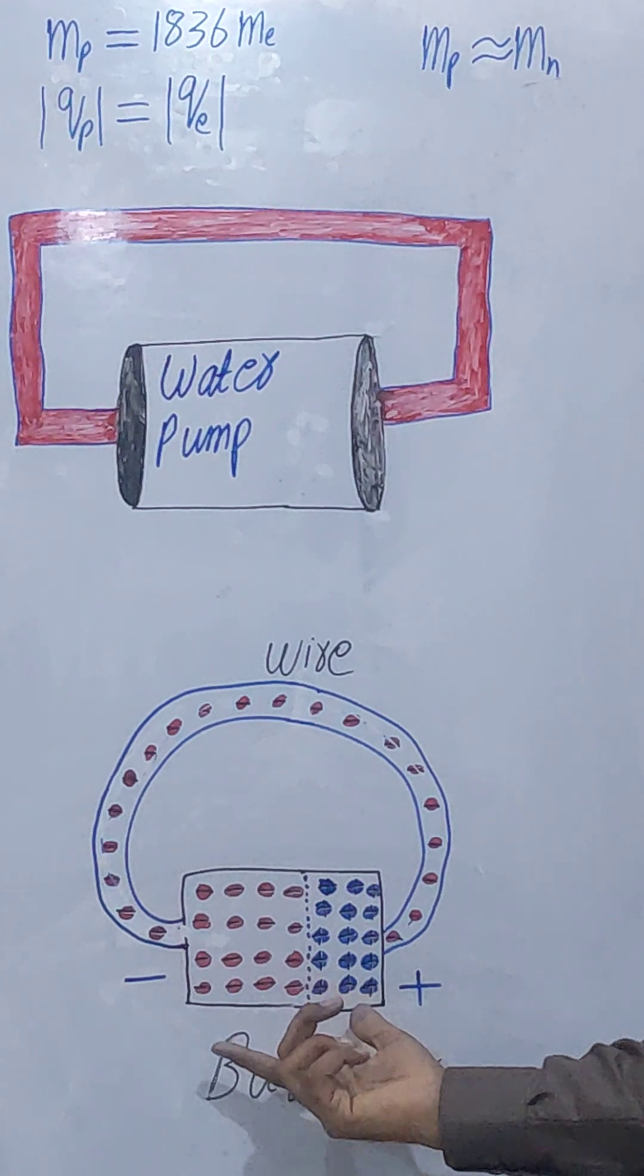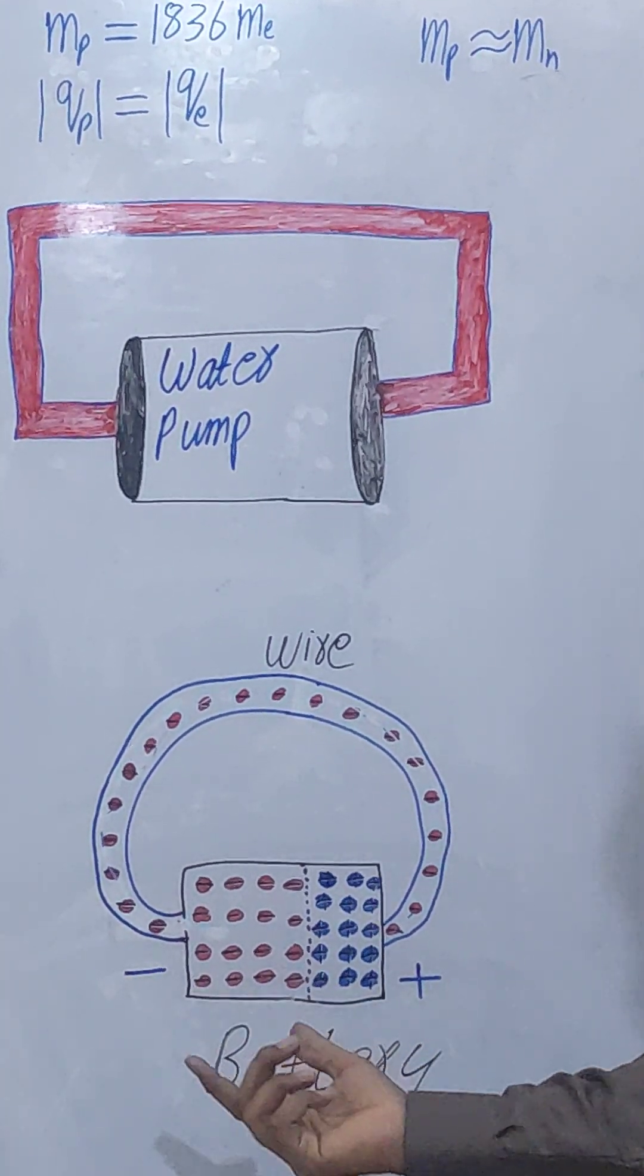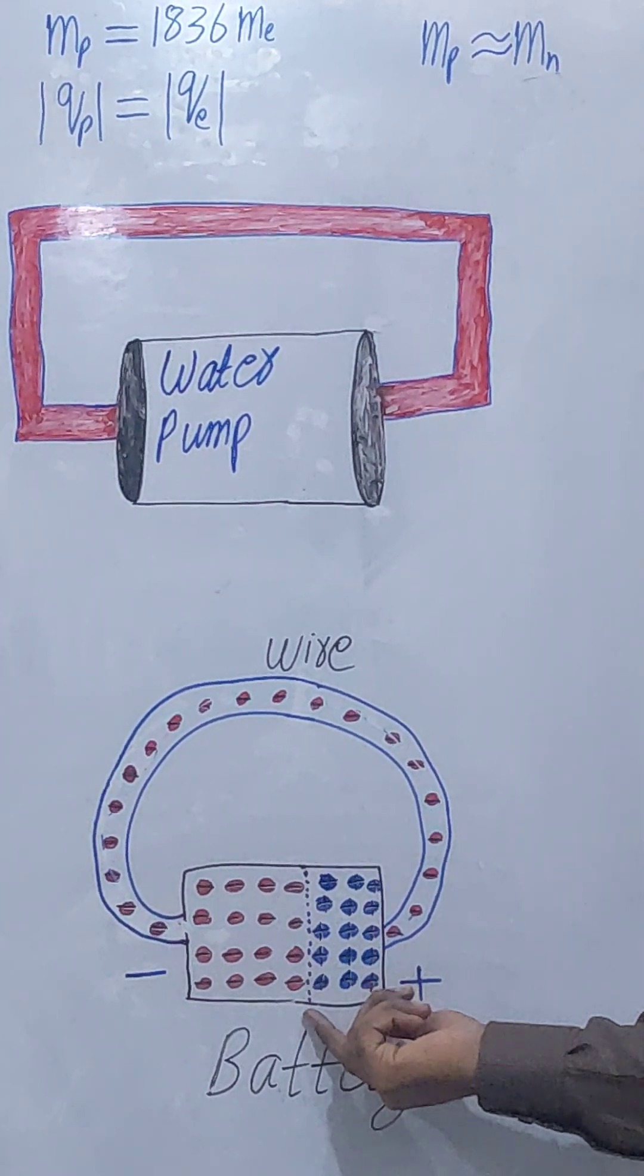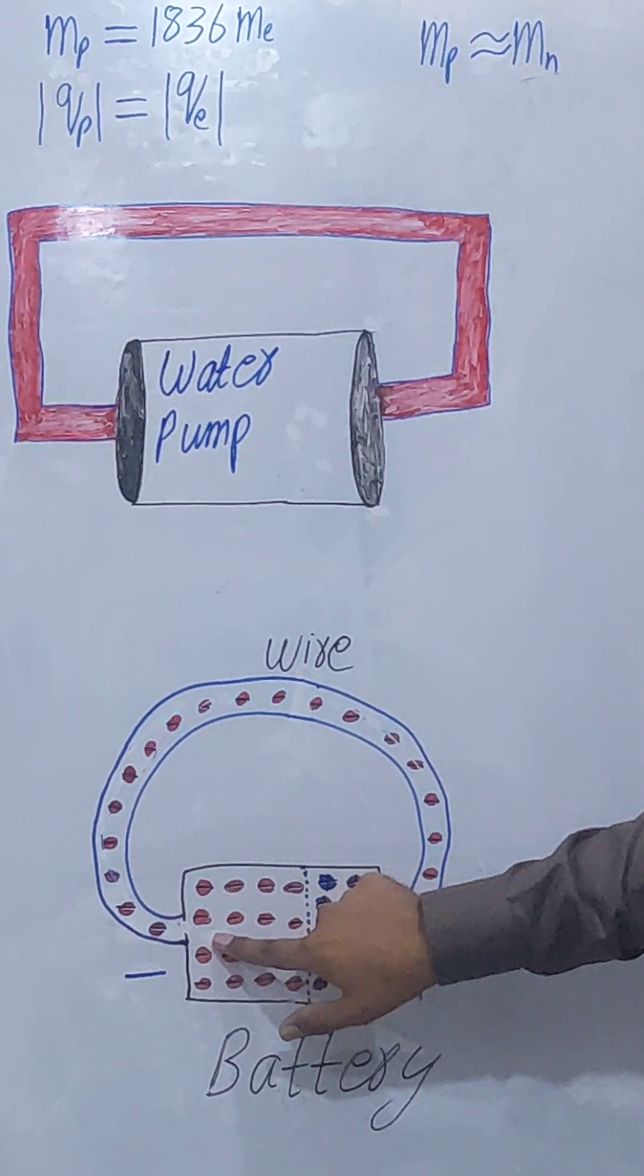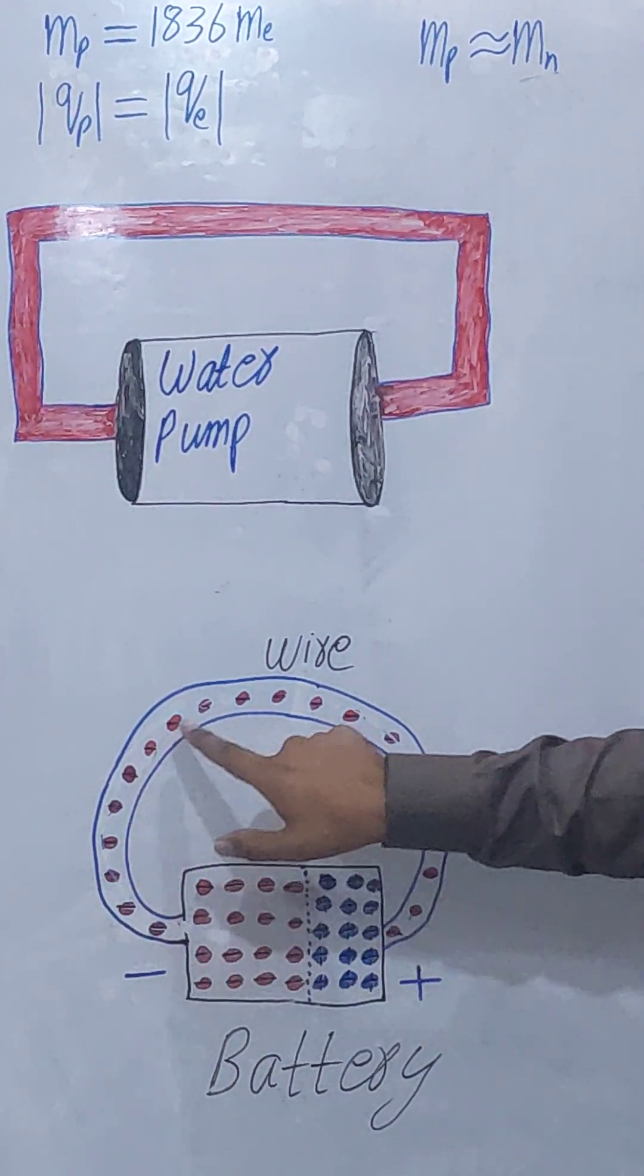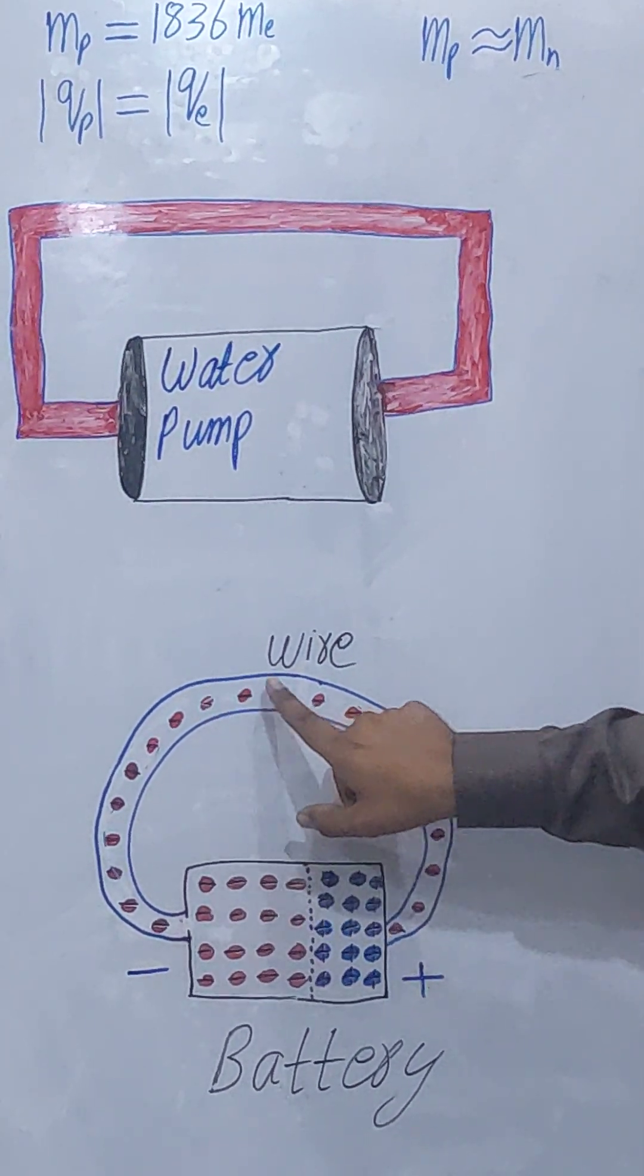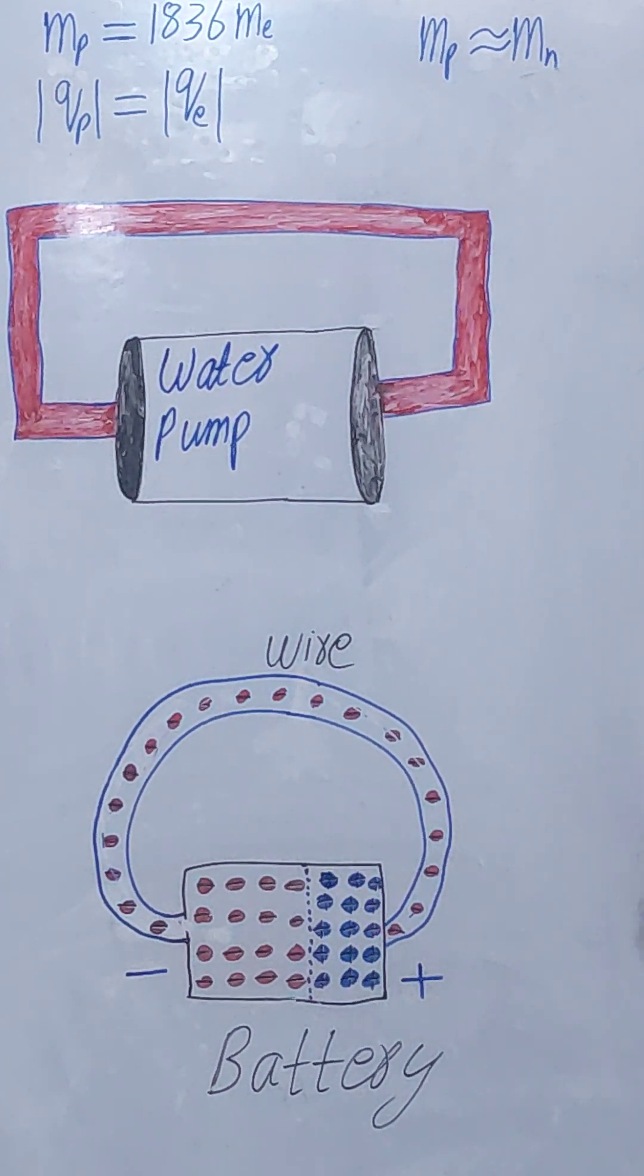The same phenomenon is happening in electricity. A battery, on one side there are negative charges, means electrons. On the other side there are positive charges. These negative charges repel each other, and that is why these negative charges start to flow through the pipe. These electrons start to flow through the wire. The flow of electrons through the wire is known as electric current. This is current.